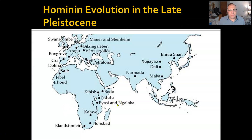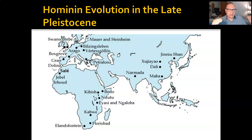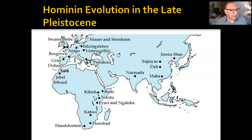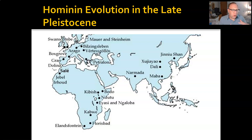To give you a picture of the wide range we're talking about, here we have sites for archaic Homo sapiens. These are the transitional forms between late Homo erectus in each of these regions and the regional species that will come about — Neanderthals in Europe, Denisovans in Asia, and Homo sapiens in Africa. Remember, up until Homo erectus, we were just focusing on little parts of Africa. Now we've got these sites all over the place.